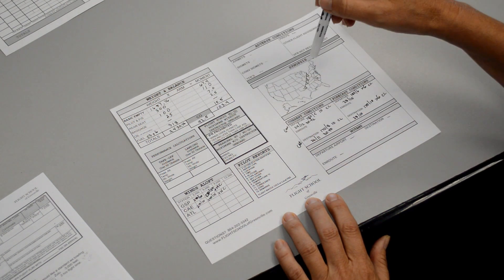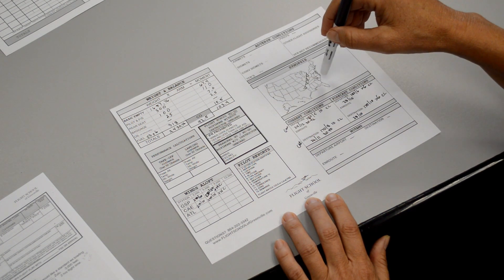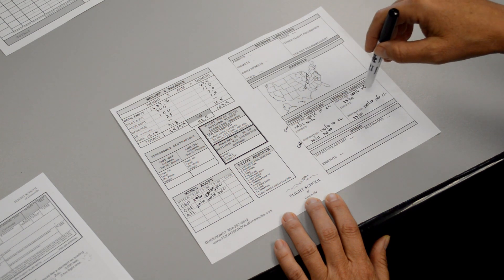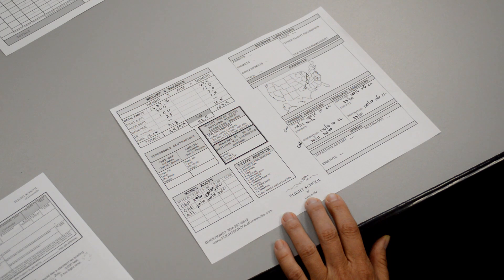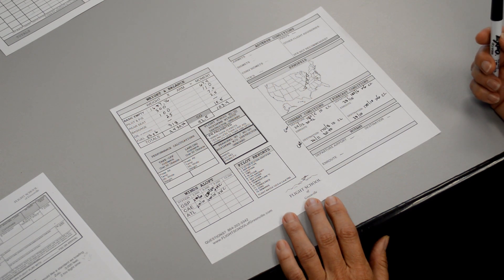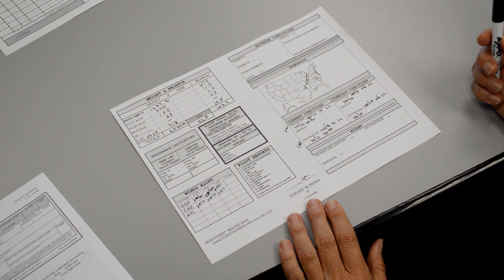So, with our flight from Greenville to Columbia, South Carolina, it looks like a more southeasterly course. So, we have to choose an odd thousand plus 500 for our cross-country flight. And that rule, remember, begins once we're above 3,000 AGL.